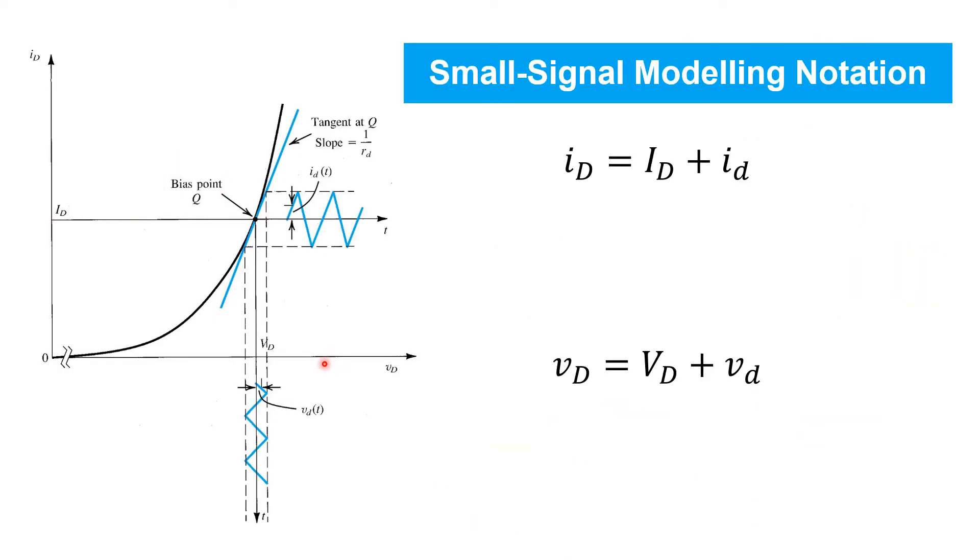So the premise is that the diode operates nominally at this bias point Q, but that for relatively small incremental changes in diode voltage VD, which are plotted here versus time, we wiggle back and forth along the diode IV characteristic, resulting in incremental changes in drain current as plotted here versus time.